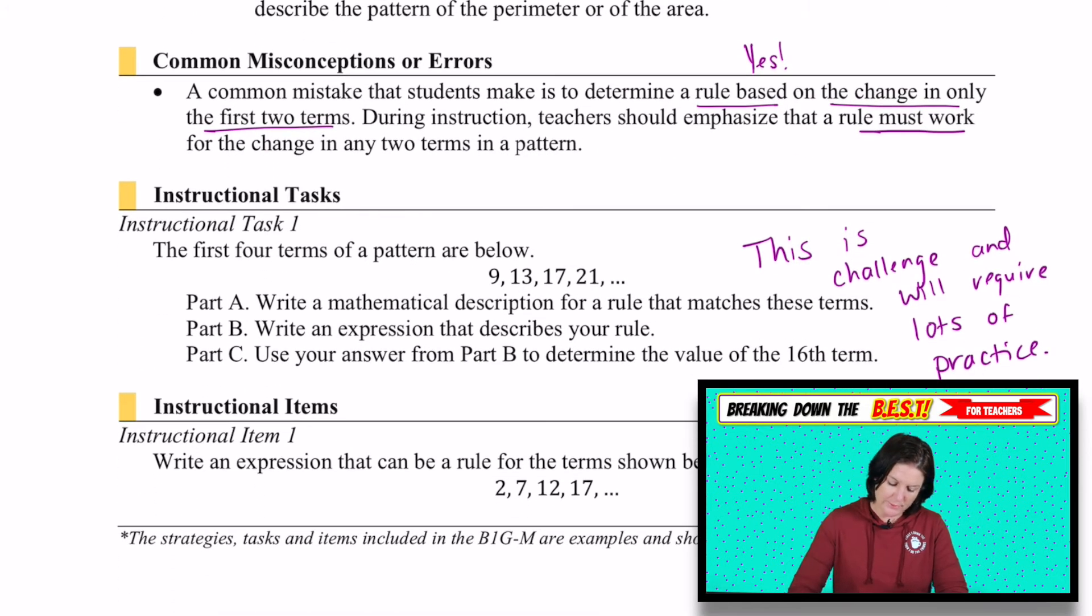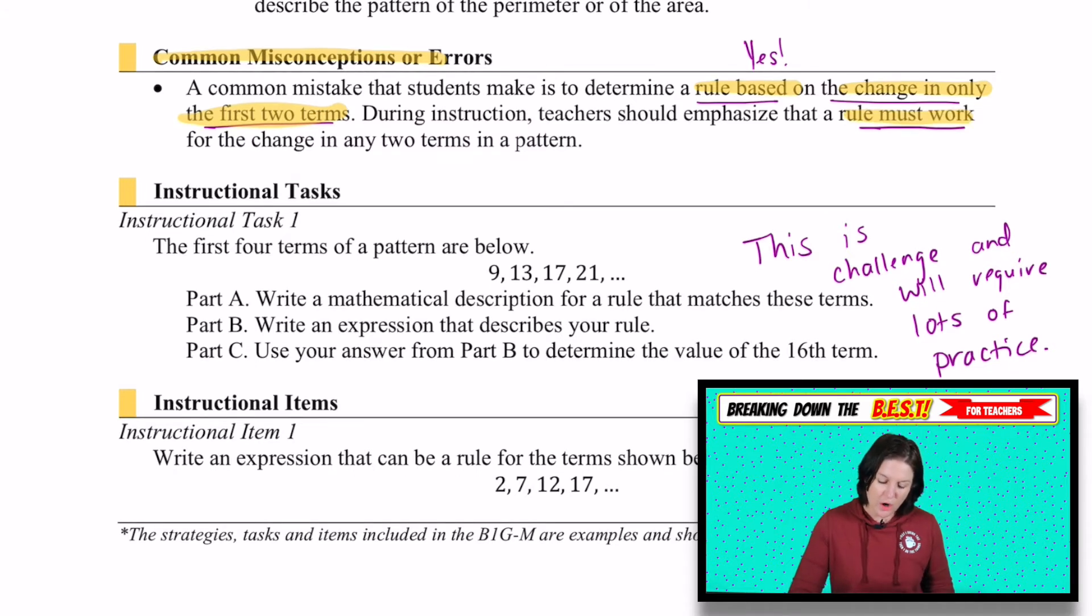All right. Some common misconceptions. I said a common mistake that students make is to determine a rule based on the change only in the first two terms. So just looking from one term to the next. But the rule has to work for all of the patterns. You should be able to apply this expression to any and plug in any term number for x and get the output that you're looking for.